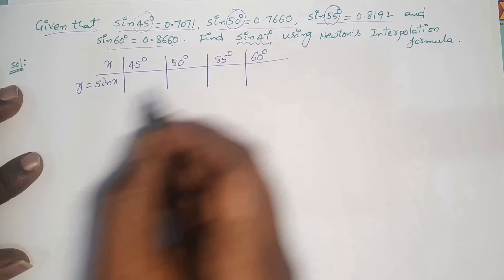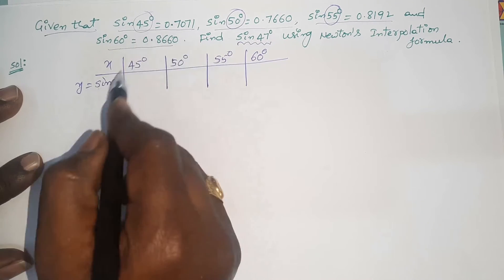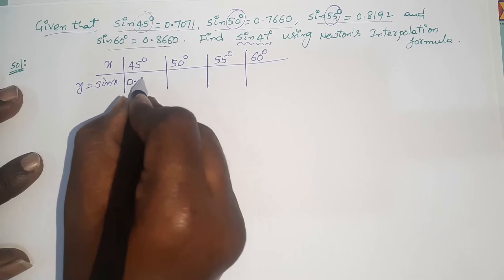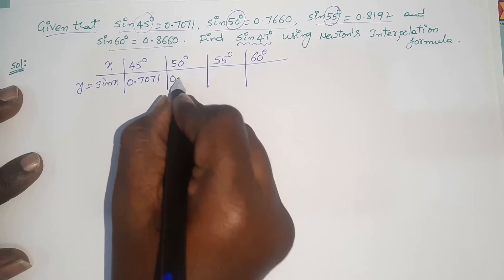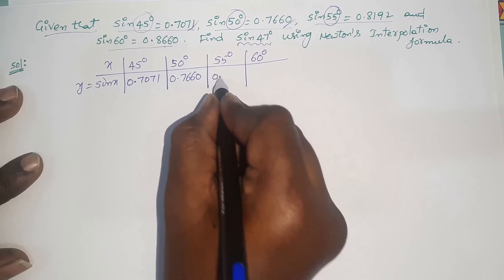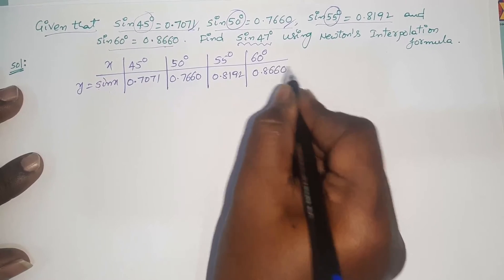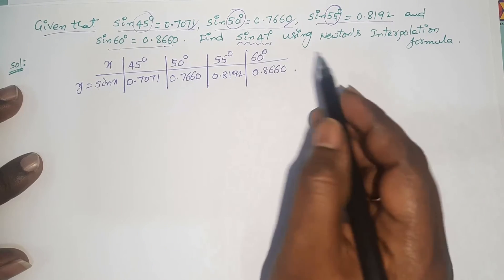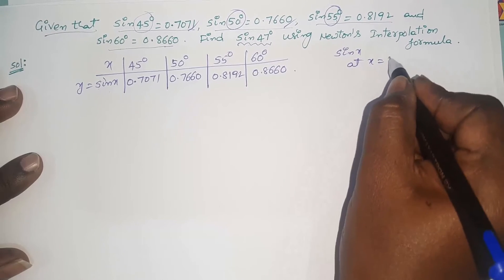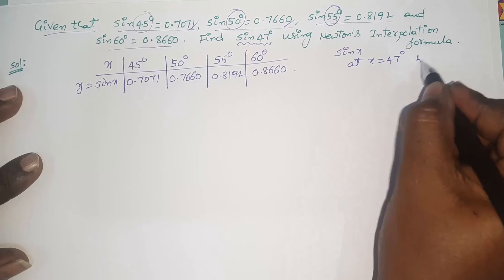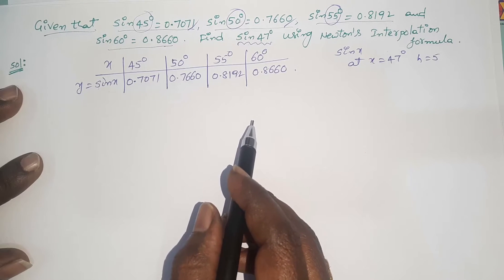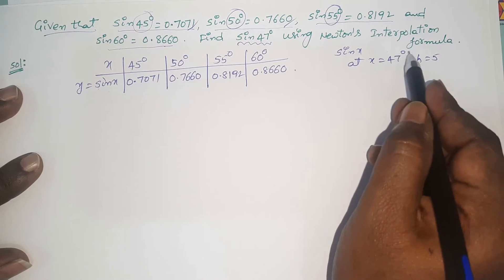The x values start from 45°, then 50°, 55°, and 60°. The corresponding sin values are: sin 45° = 0.7071, sin 50° = 0.7660, sin 55° = 0.8192, and sin 60° = 0.8660. We need to find sin 47°, i.e., the value of y at x = 47°. The interval difference h = 5 degrees, so the data has equal spacing.